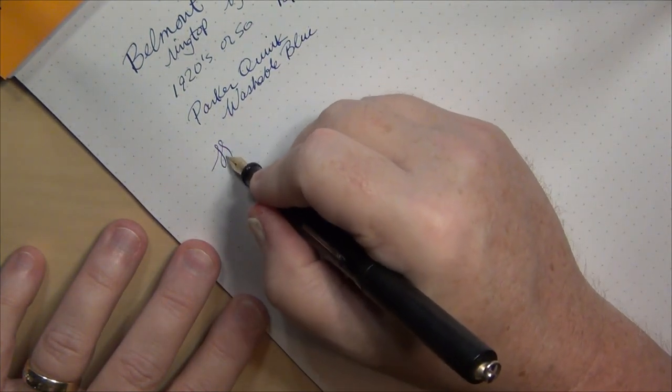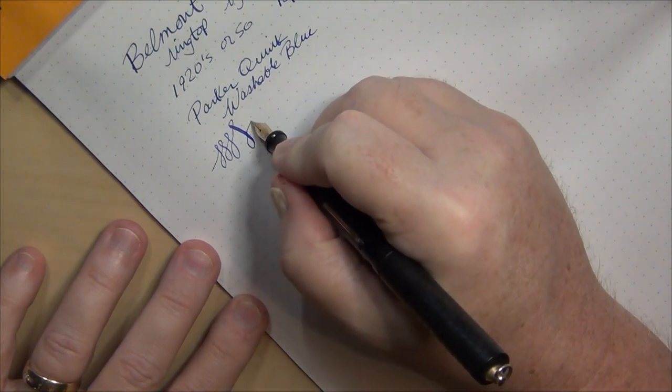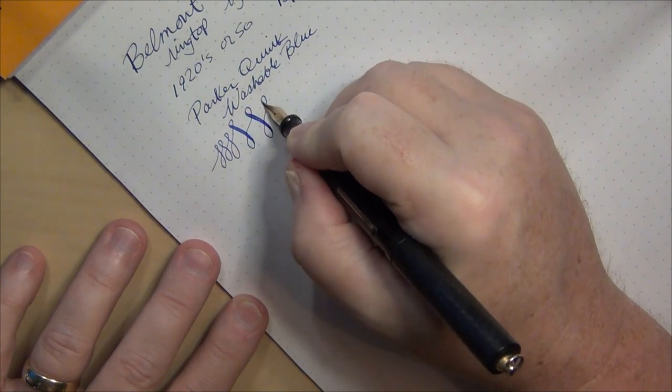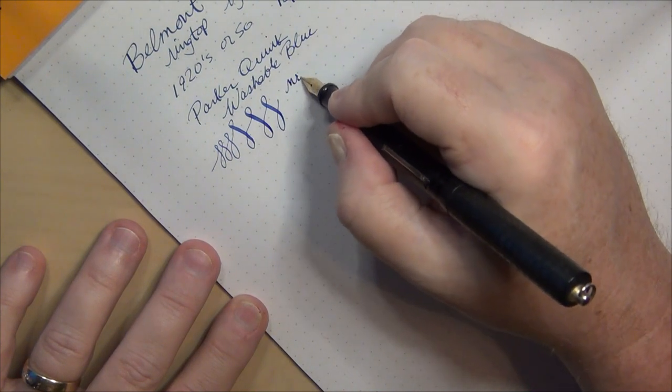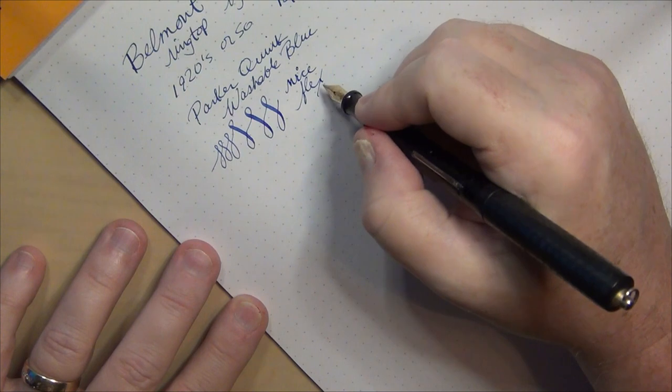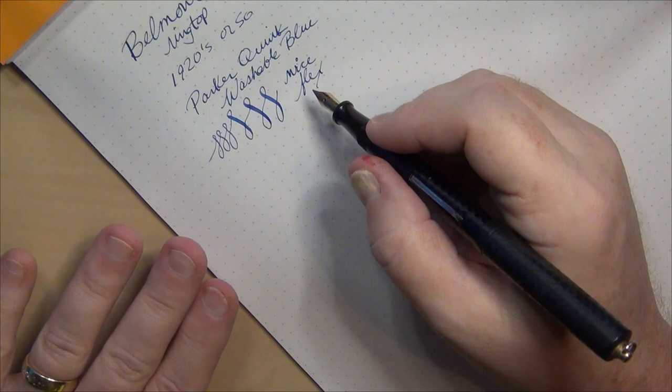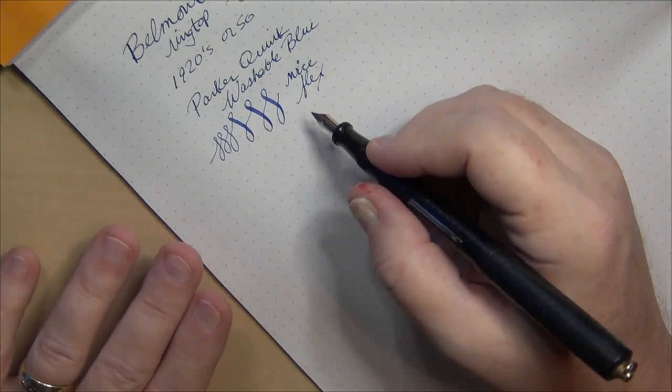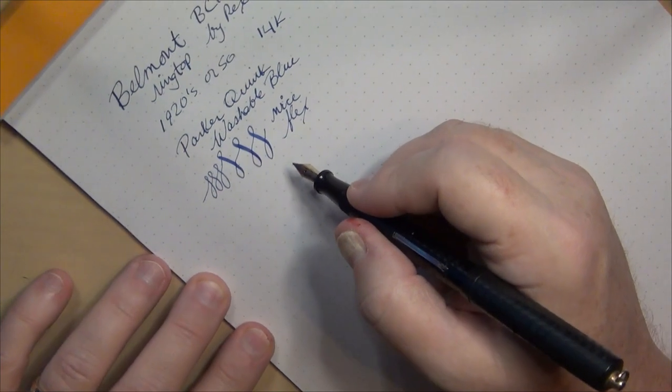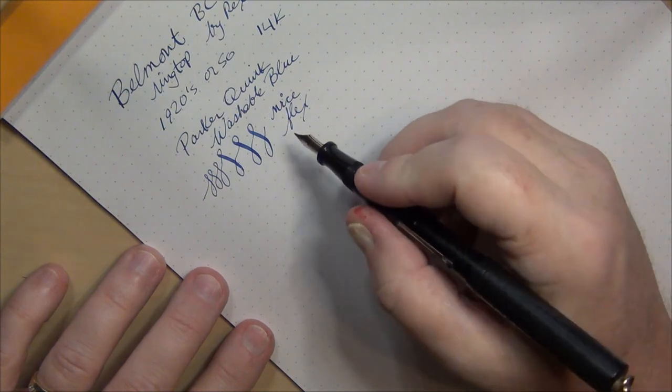This particular pen has the nib that says warranted on it, so it's supposed to be what, a 14k nib. Well let's go see how well that works. Big fat line. Nice flex. You get a good amount of feedback on it, it is not the smoothest nib in the world however it is still very acceptable in my opinion. I really wouldn't try to do any smoothing on this one just because I'm happy with the way it performs.